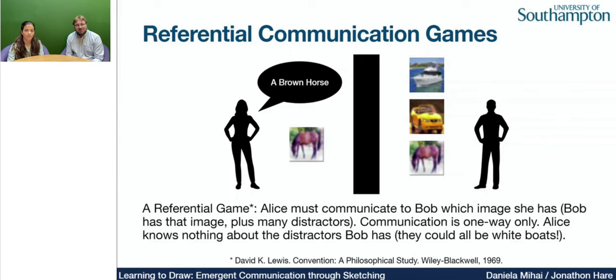In the example shown on the slide, Alice on the left-hand side has an image of a horse. Bob, on the right-hand side, has an image of a horse plus a number of distractor images. The objective of the game is for Alice to communicate to Bob which image he should pick. The challenge is that Alice knows nothing about Bob's distractors — they could all be images of horses.